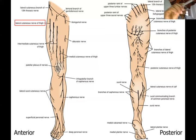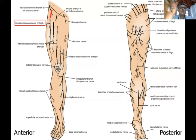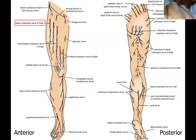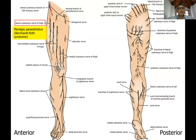This nerve comes under the inguinal ligament towards its lateral end and appears in the lateral upper corner of the femoral triangle. The issue arises when it comes under the inguinal ligament — it can get compressed there, causing altered sensations and pain in the anterolateral aspect of the thigh. That condition is called neuralgia paraesthetica.